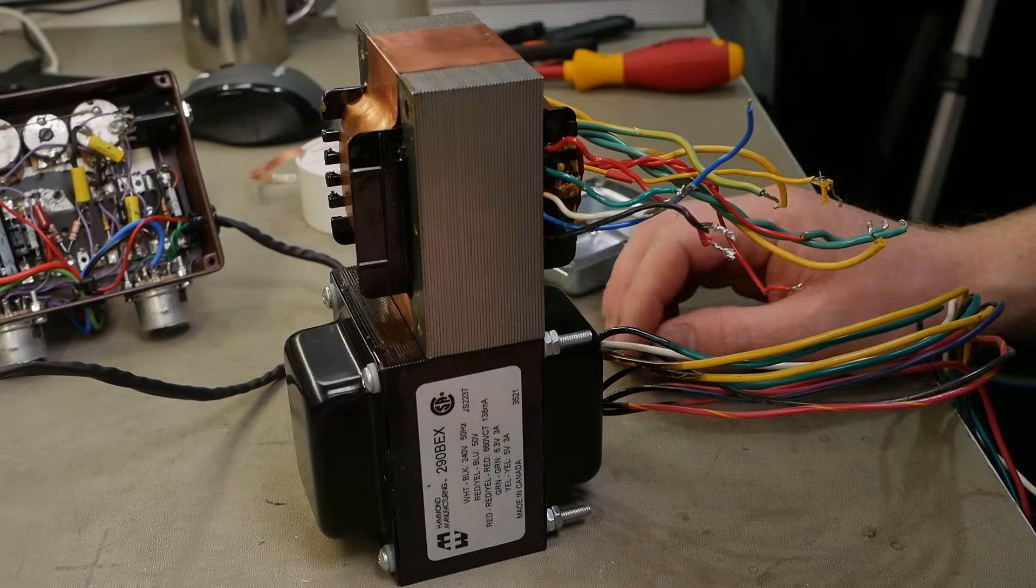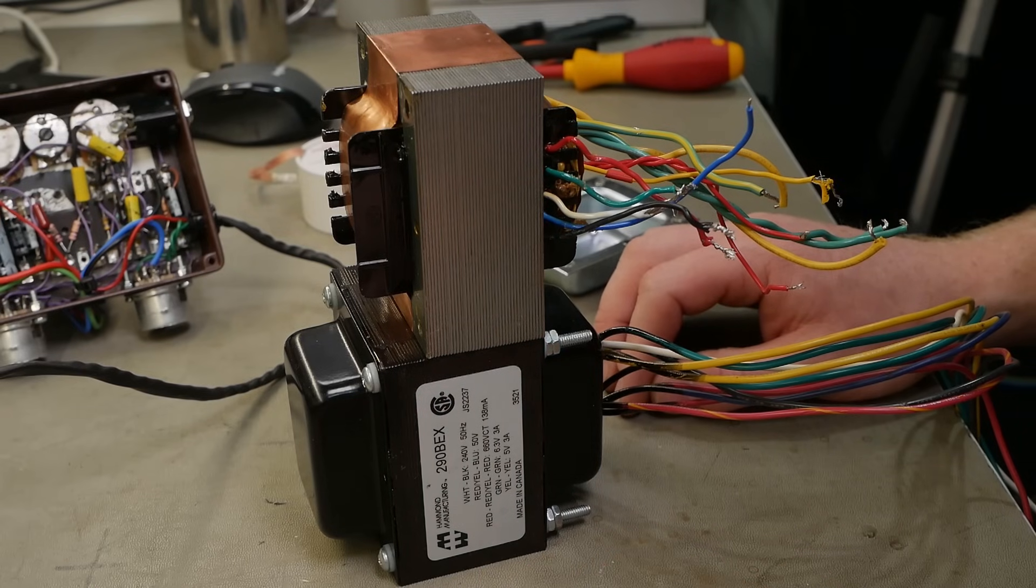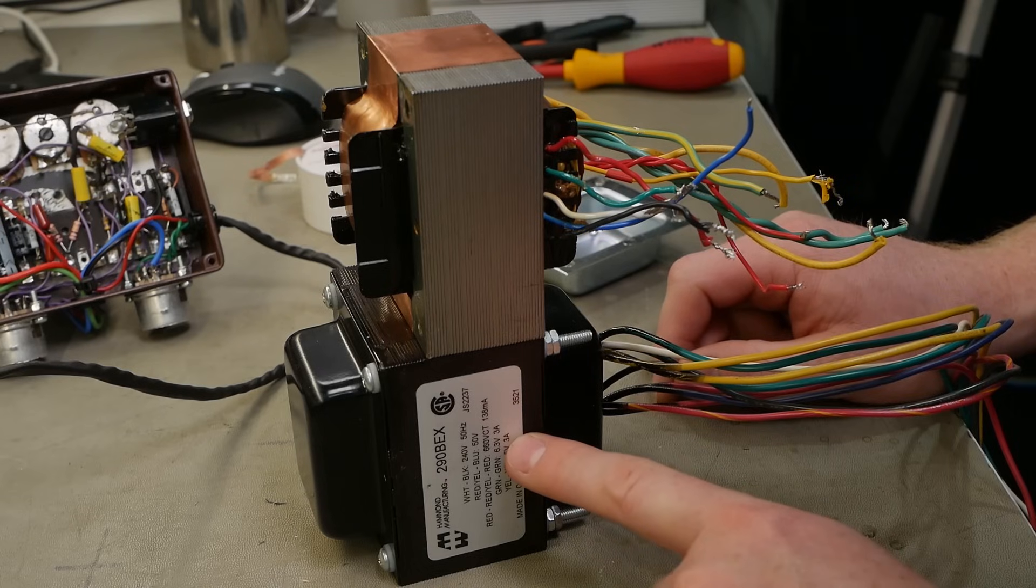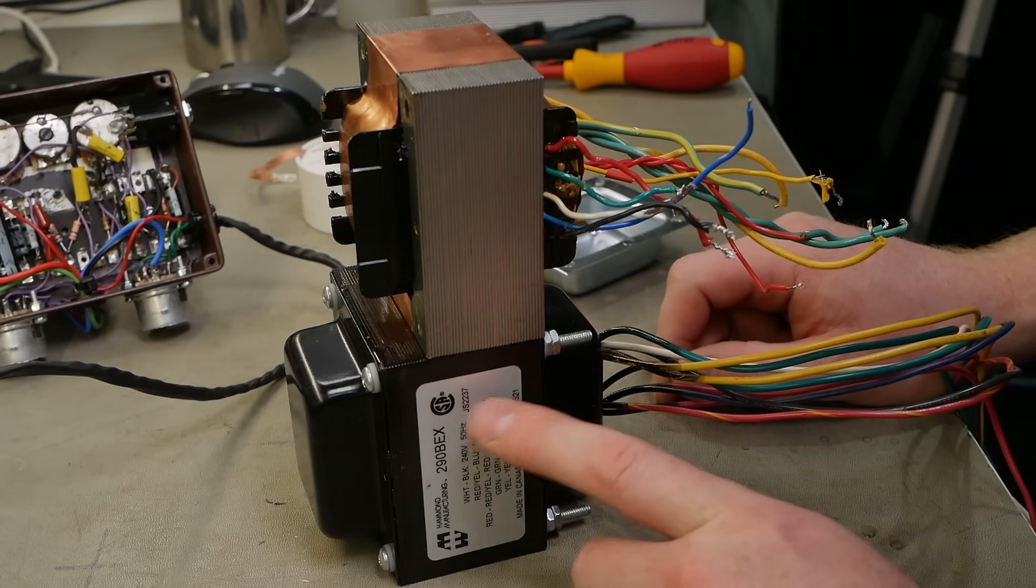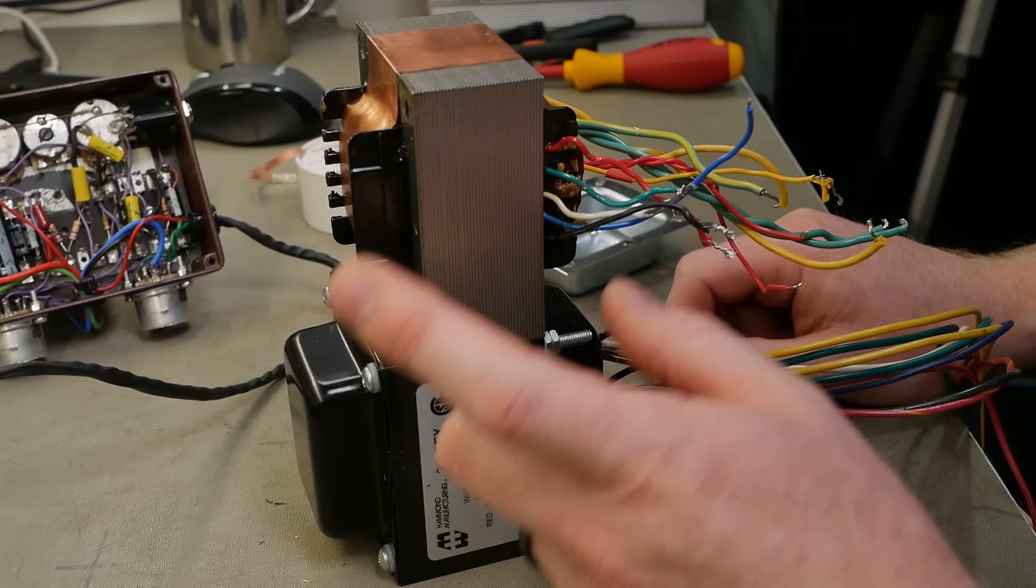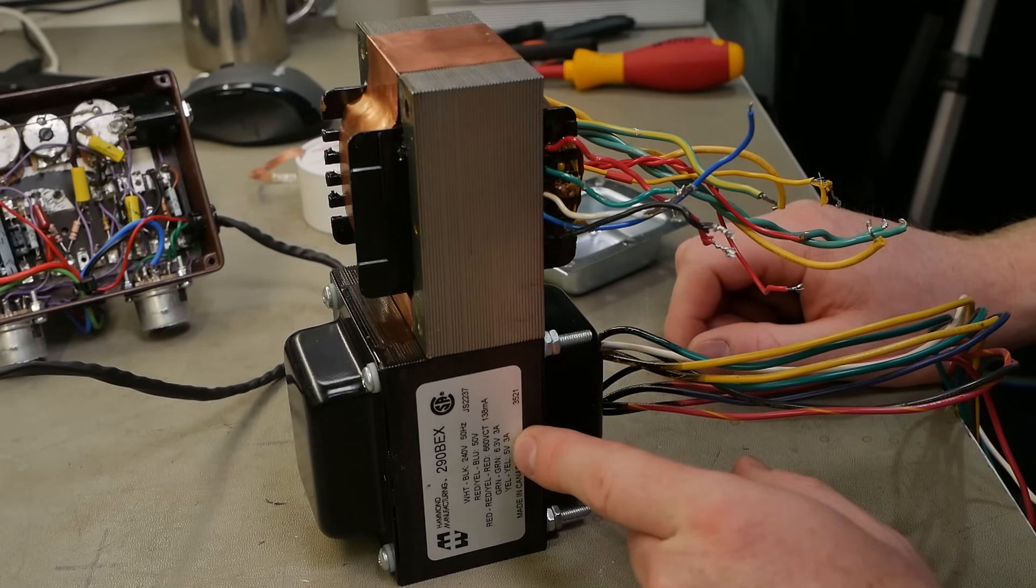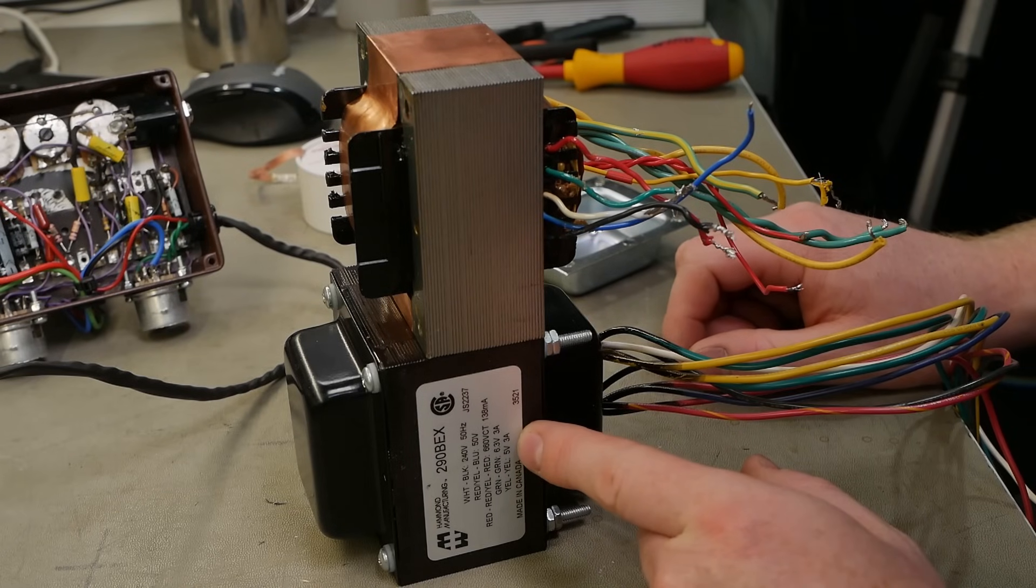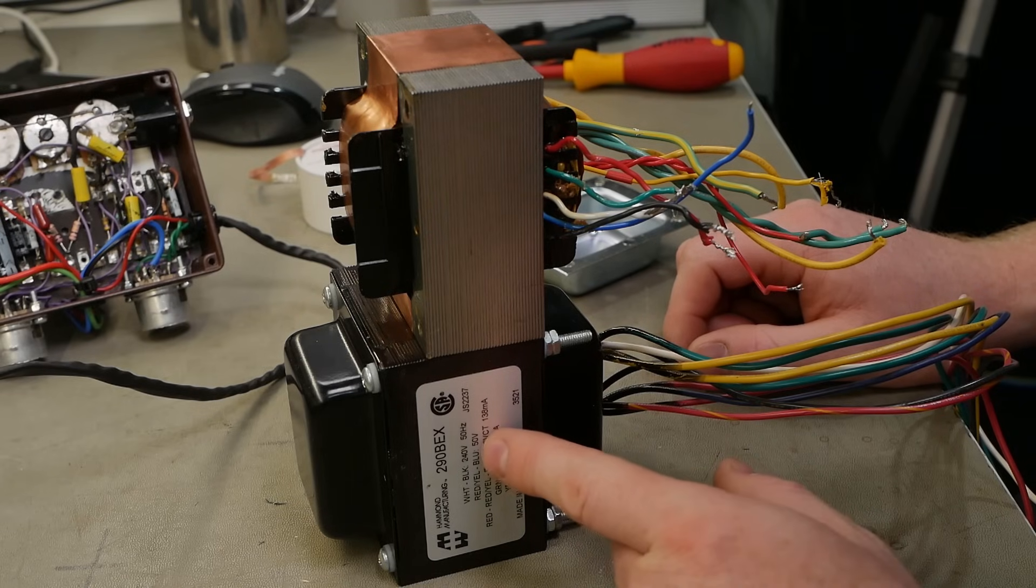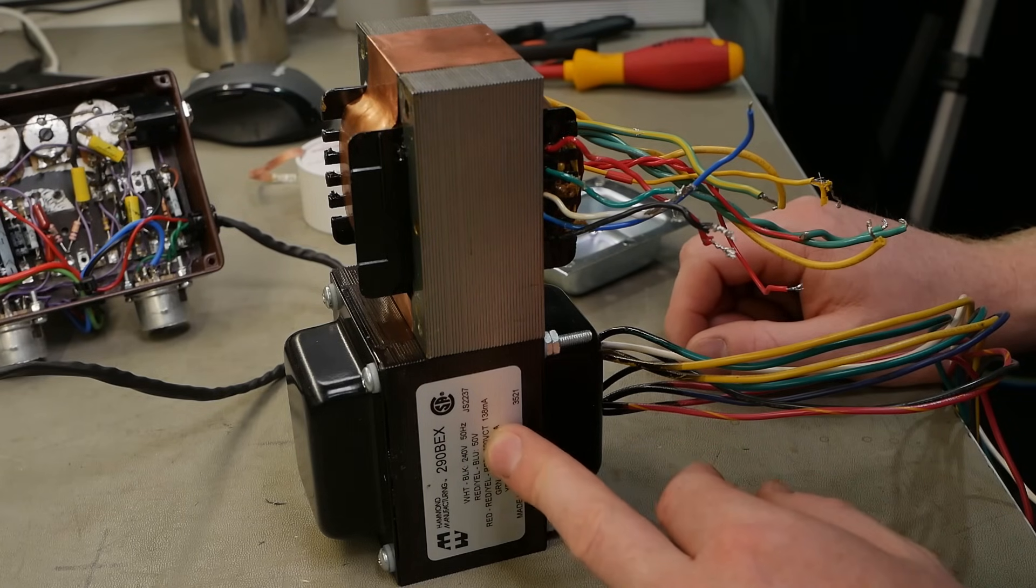The 290 BAX is meant for either the Deluxe Reverb, the AB763. The 6.3 volt heater winding has more current capability, so I'll feel a bit safer putting this one in than just a standard Deluxe, which is only meant for two 12AX7s. The 5 volt winding is the same three amp—that's only powering the heaters of the rectifier valve. It's got a 50 volt tap which doesn't get used in this application.